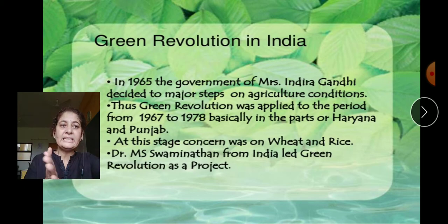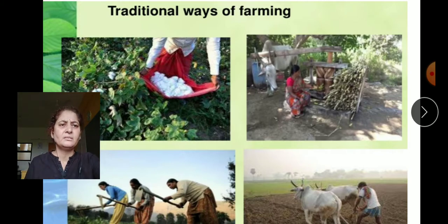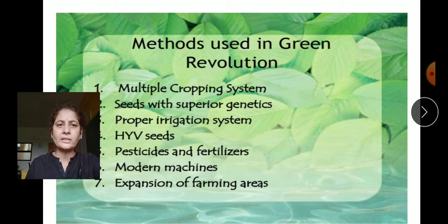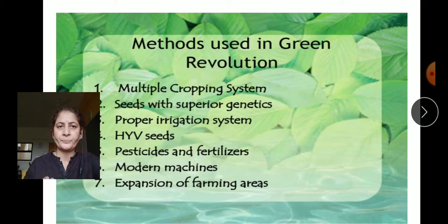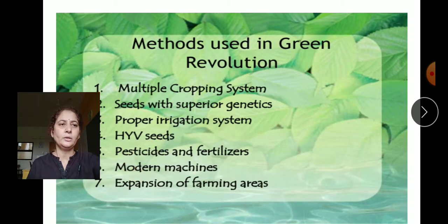Swaminathan led the Green Revolution project. The traditional ways required small areas and much human effort. What was introduced in the Green Revolution: a multiple cropping system, superior genetically modified seeds, improved irrigation systems, hybrid seeds, fertilizers and pesticides, modern machines, and expansion of farming area.